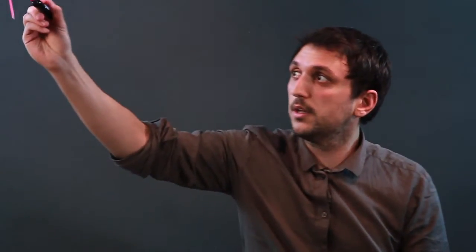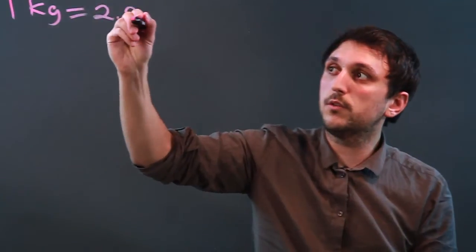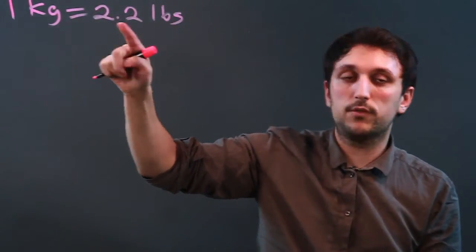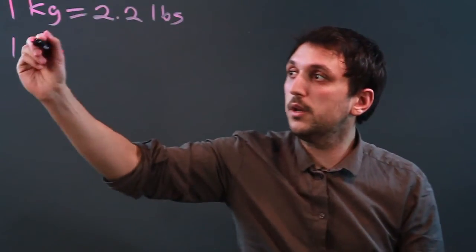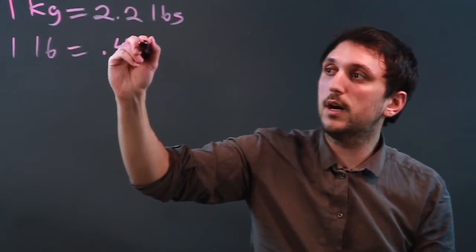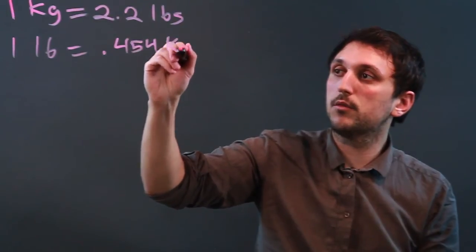One kilogram equals 2.2 pounds, roughly. It rounds down to 2.2. And one pound equals 0.454 kilograms, rounded.